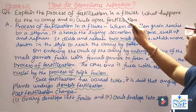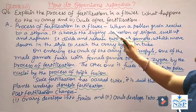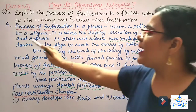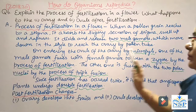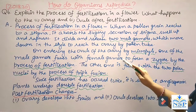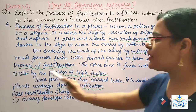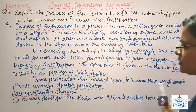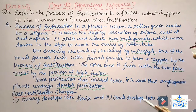Our next question is: explain the process of fertilization in a flower. What happens to the ovary and ovule after fertilization? When a pollen grain reaches the stigma, it absorbs the sugary secretion of the stigma, swells up, and ruptures. It divides and releases two male gametes, which move down through the style to reach the ovary via the pollen tube. On entering the ovule through the micropyle, one male gamete fuses with the female gamete to form a zygote by fertilization, and the other fuses with the two polar nuclei by triple fusion. Since fertilization occurs twice, angiosperm plants are said to undergo double fertilization. Post-fertilization: the ovary develops into fruit and the ovule develops into seed.